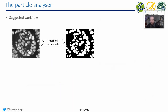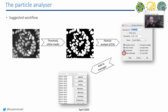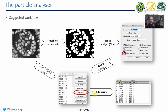That's the suggested workflow: start from the original image, do thresholding and refine masks, use the Particle Analyzer, and as an alternative to Display Results, you can use the Measure button in the ROI Manager to get measurements from the original image. Try both approaches and discover the differences — why is it sometimes better one way versus the other?